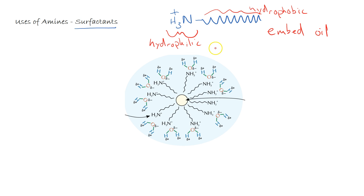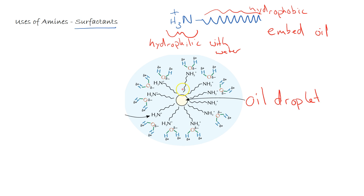The hydrophobic end will embed into oil droplets because it will interact with the oil, and the hydrophilic end will interact with water. What this means is we end up forming spheres around oil droplets — we can see in our diagram here an oil droplet in the middle which has got the hydrocarbon ends embedded into it. There is then the hydrophilic amine end sticking into the water, forming a sphere around the oil droplet which is able to form an emulsion, and therefore appears to dissolve and act as essentially a detergent.